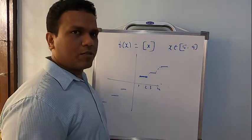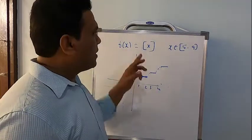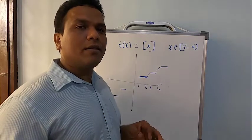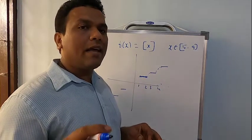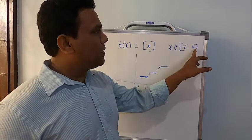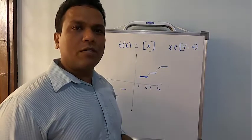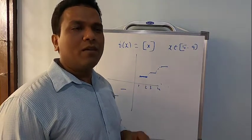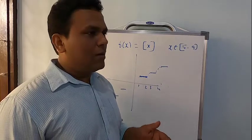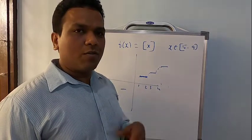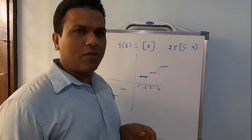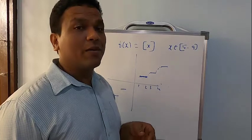Generally you can give a conclusion: the greatest integer of x is not continuous at any integral point. Therefore it is not continuous in the closed interval [5, 9]. If it's not continuous, it's not differentiable. If it's not differentiable at all, no need to check the further conditions — no need to check f(a) equal to f(b).